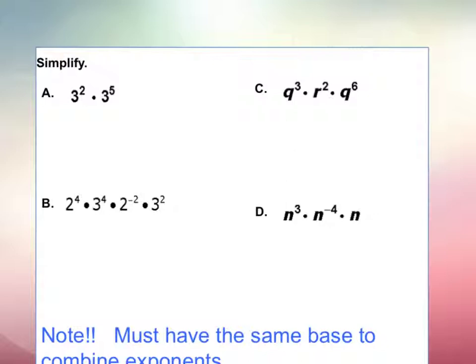So here, for part A, I have 3 squared multiplied by 3 to the 5th. That would be 3 to the 2 plus 5, which gives us our final answer as 3 to the 7th power. And you don't need to expand it. That means you don't need to multiply 3 to the 7th power. For our class, our rule is if it's anything to the 4th power or less, you need to evaluate that.